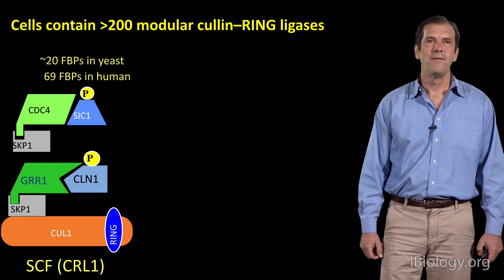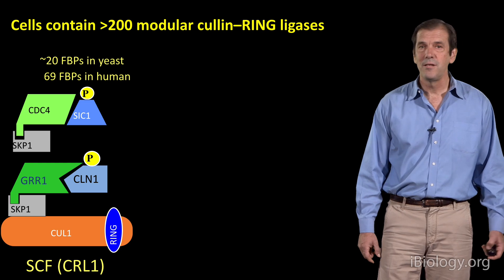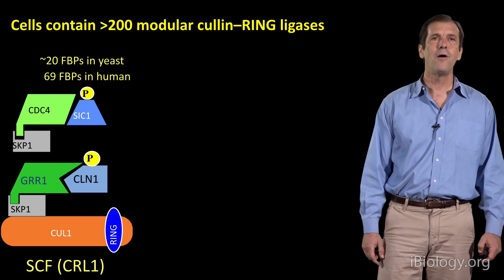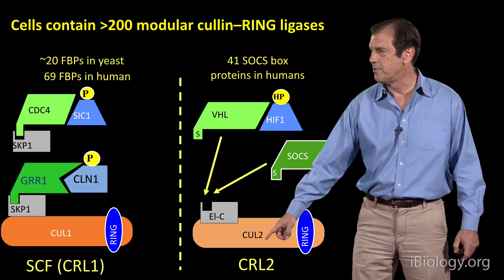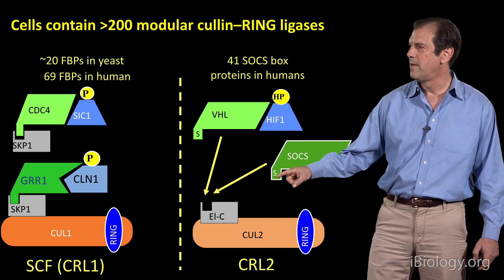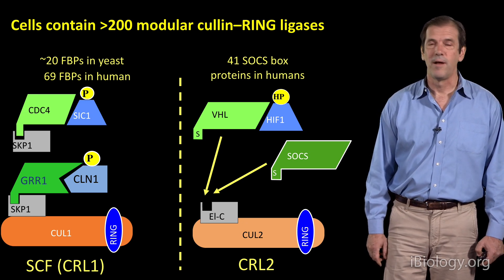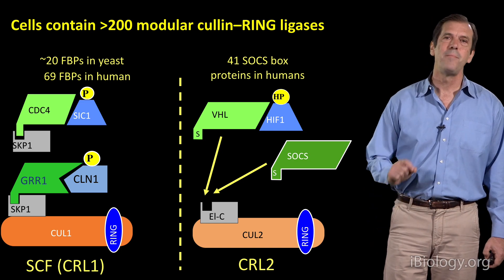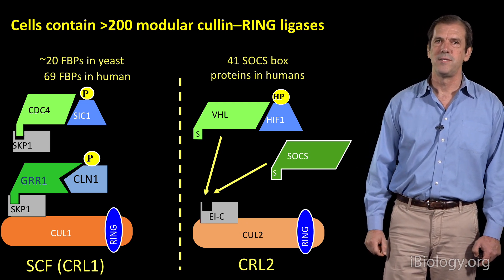In yeast there are 20 F-box proteins, and in humans there are about 70, so you could potentially form 70 SCF-CRL1 ubiquitin ligases in a human cell, each with a different function. Beyond that, there is a CRL2 organized on a CUL2 scaffold with about 40 SOX-box substrate receptors, as well as CRL3, CRL4A, CRL4B, CRL5, and CRL7. Adding up all those substrate receptors, you can make about 250 different CRL enzymes in a human cell.